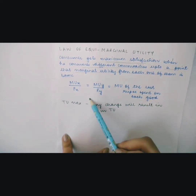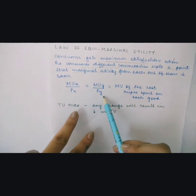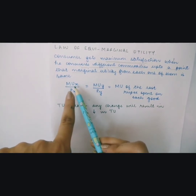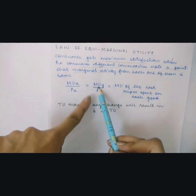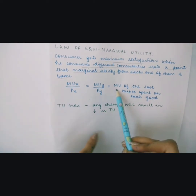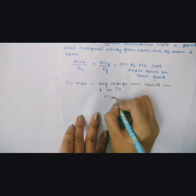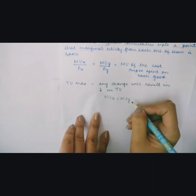The law of equimarginal utility says that the consumer will derive maximum satisfaction when consuming two commodities — X and Y — such that the marginal utility from each one of them is equal to the marginal utility of the last rupee spent on each good. Basically, we are looking for a condition where the marginal utility of X is equal to the marginal utility of Y.